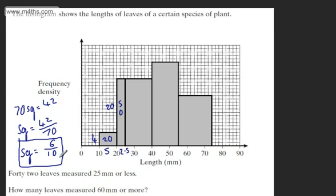So each square gives me 6 tenths of a leaf. What we're interested in now is to find those that are greater or equal to 60. So let's find 60, and what we're interested in now is this area right here. That's going to have a base.